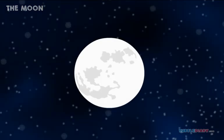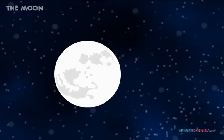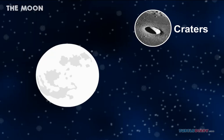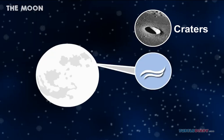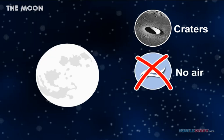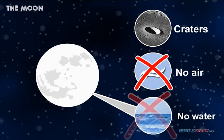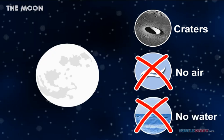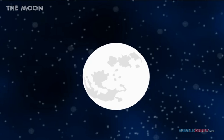The Moon is not smooth on its surface. It has craters, big holes. It has no air. It does not have water. So there is no life on the Moon.